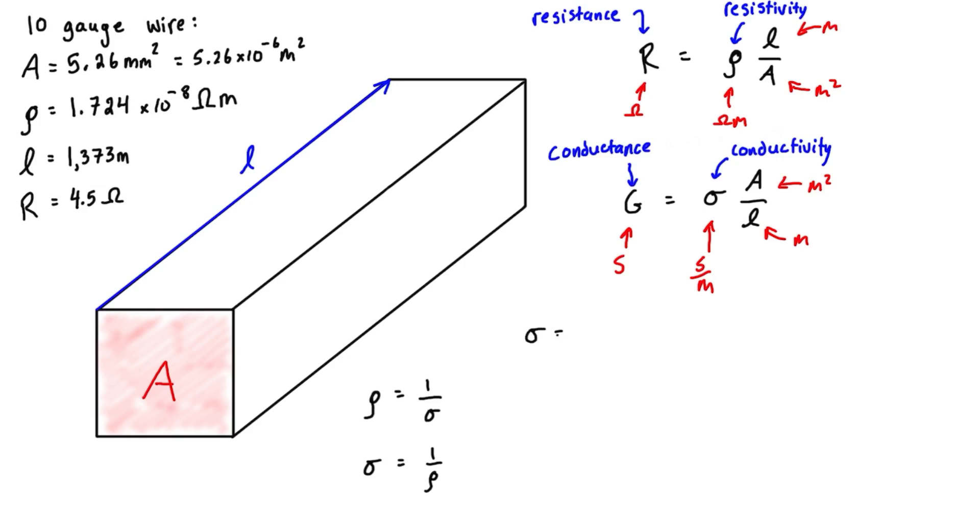If conductivity equals 1 over resistivity, then we have 1 over 1.724 times 10 to the negative 8 ohm meters.